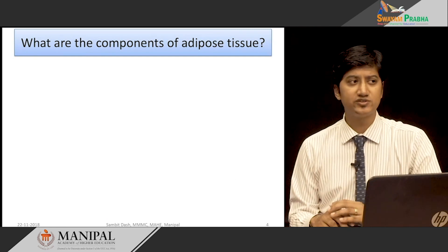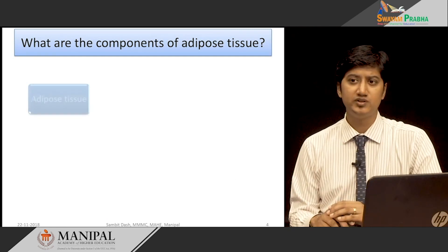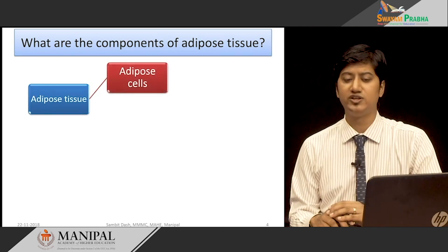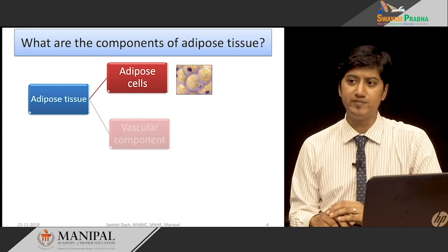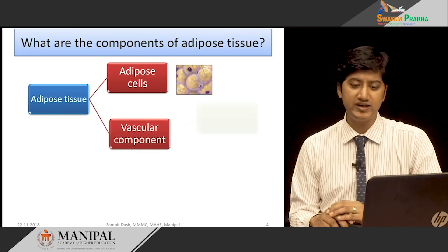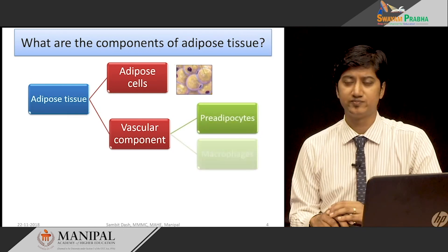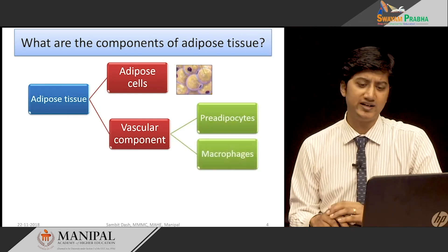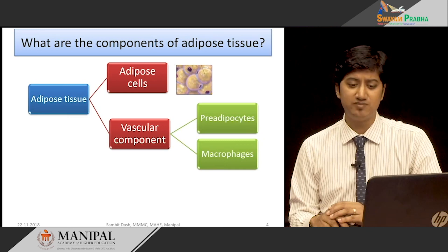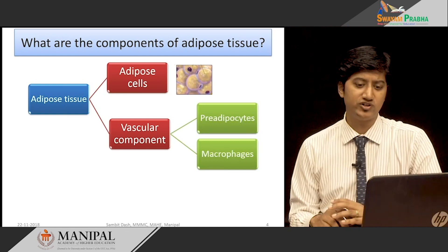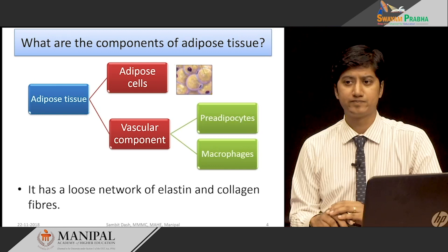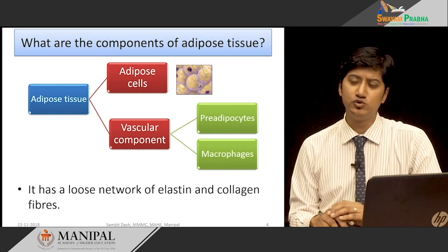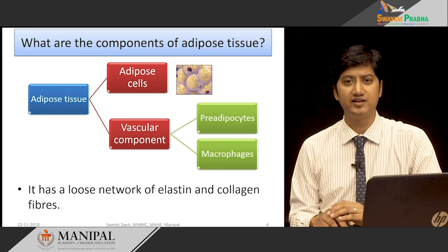What are the components of adipose tissue? The adipose tissue comprises of the lipid-storing adipose cells and a vascular compartment which includes pre-adipocytes and macrophages. To give you an overall idea, in a 70 kg man, the white adipose tissue weighs around 14 kg, which is almost half the muscle mass.